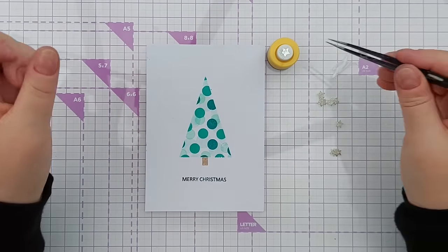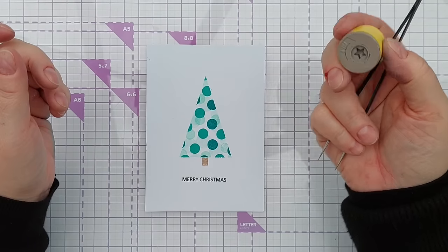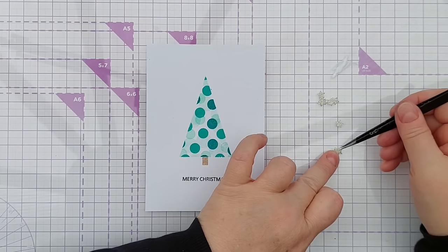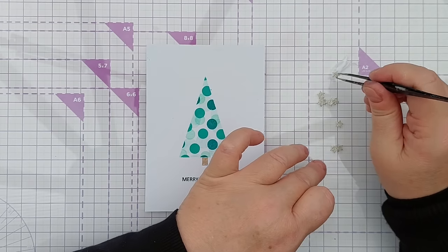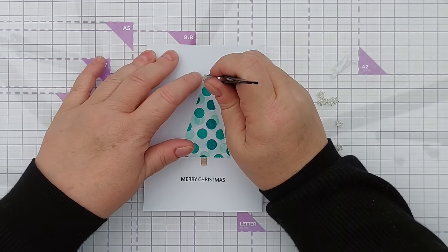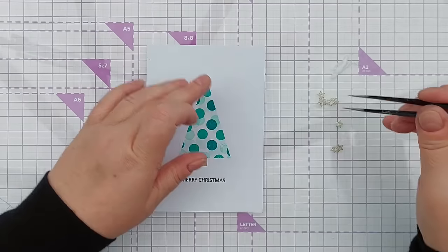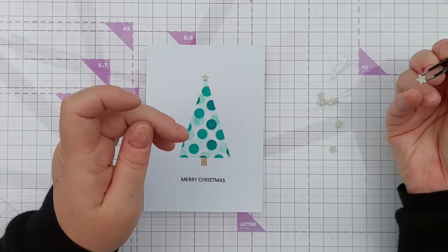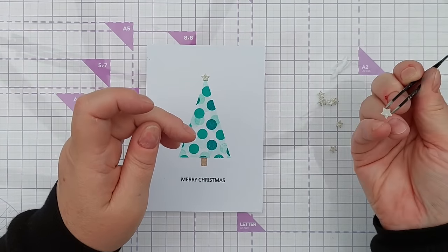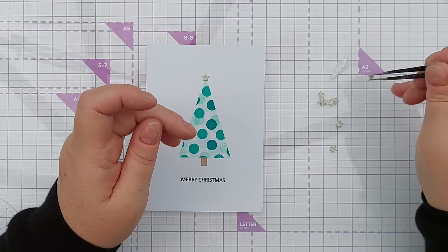To finish off my card I have used my tiny star punch to punch some gold glitter stars. I'll dip those in a little bit of high tack glue and add those to my tree, one at the top, and then some more cascading down as if they were fairy lights.